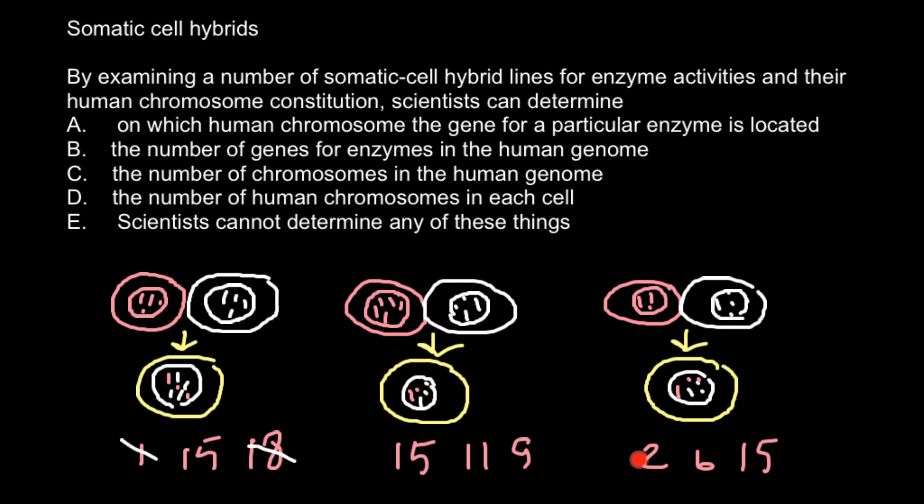And in the next cell line we have chromosomes 2, 6, and 15. So we also can say that this enzyme is not located on chromosome 11 and 9, and we also can say that it is not located on chromosome 2 and 6.